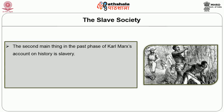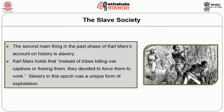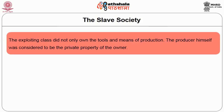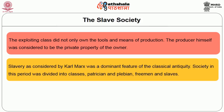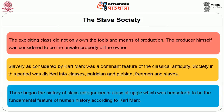The second stage is the slave society. Karl Marx holds that instead of tribes killing war captives or freeing them, they decided to force them to work. Slavery in this epoch was a unique form of exploitation. The exploitative class did not only own the tools and means of production — the producer himself was considered to be the private property of the owner. Slavery as considered by Karl Marx was a dominant feature of classical antiquity. Society in this period was divided into classes: patrician and plebeian, free men and slaves. Thus began the history of class antagonism or class struggle, which was henceforth to be the fundamental feature of human history according to him.